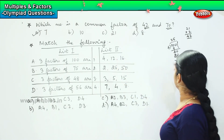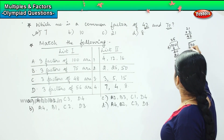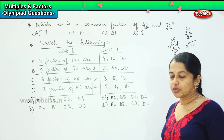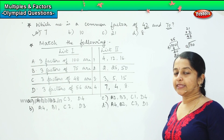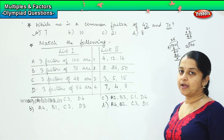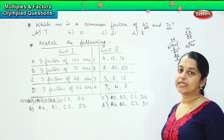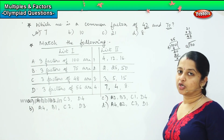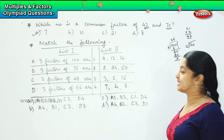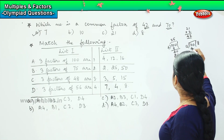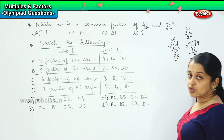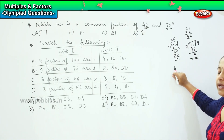Is 100 divisible by 12? Let us check the table of 12: 12×1=12, 12×2=24, 12×3=36, 12×4=48, 12×5=60, 12×6=72, 12×7=84, 12×8=96. Here it is given as 100, so we have a remainder of 4. So 100 is not divisible by 12.